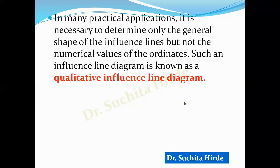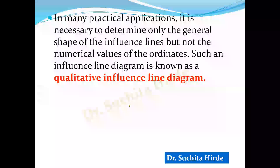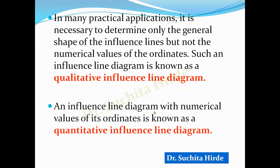In many practical applications, it is necessary to determine only the general shape of the influence lines, but not the numerical values. Such an influence line diagram is known as a qualitative influence line diagram. In a qualitative ILD, we are not interested in the numerical value of the ordinate — we only want to see the shape. An influence line diagram with numerical values of its ordinates is known as a quantitative influence line diagram. In this video, we will learn how to draw qualitative influence line diagrams for indeterminate structures.